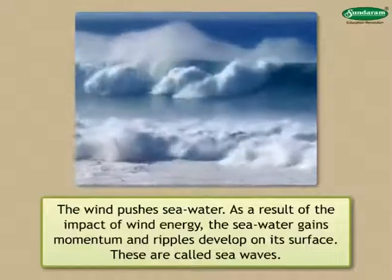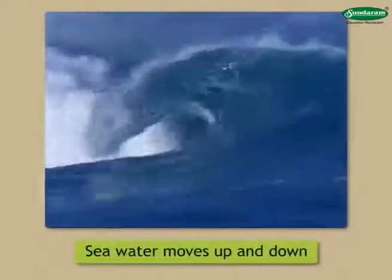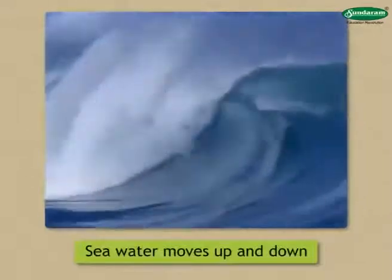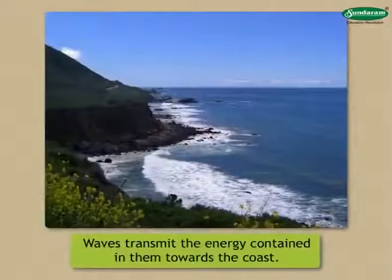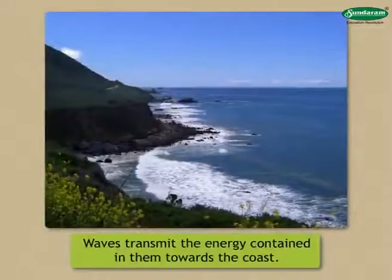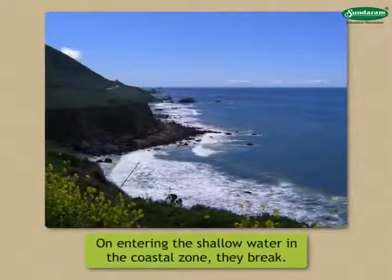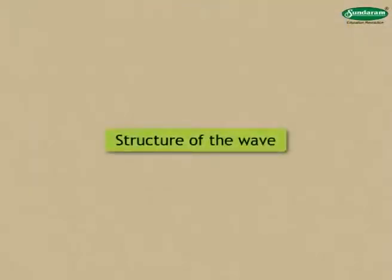As a result of the waves, seawater moves up and down and slightly to and fro. Waves transmit the energy contained in them towards the coast. On entering the shallow water in the coastal zone, they break. Now learn more about the structure of the wave.